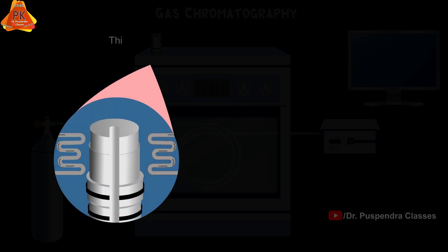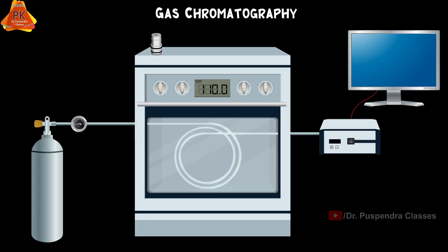But if we are injecting liquid sample, then it will be converted into gaseous form due to heating created by heated metal block present in the sample inlet part. The vaporized liquid sample will move towards the capillary column.